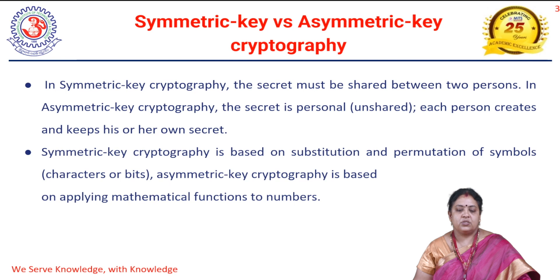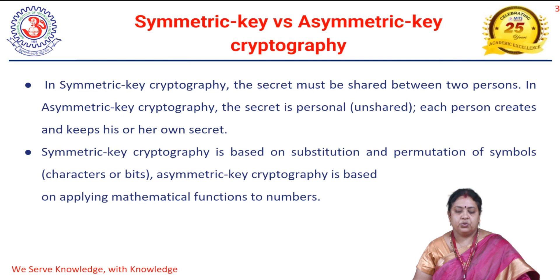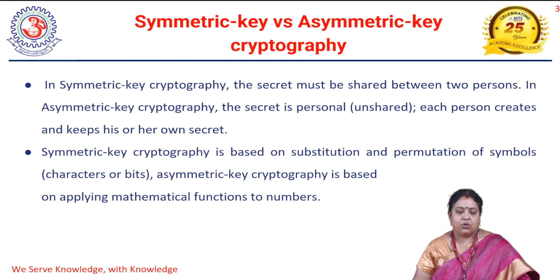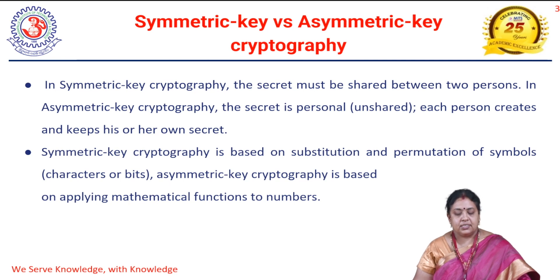Symmetric key cryptography is based on substitution and permutation. As we have seen in earlier sessions, private key encryption, that is symmetric key cryptography, is mainly based on substitution and permutation — those are the only two building blocks used in symmetric algorithms. Whereas asymmetric key cryptography works by applying mathematical functions to numbers. That is one more difference between symmetric and asymmetric.